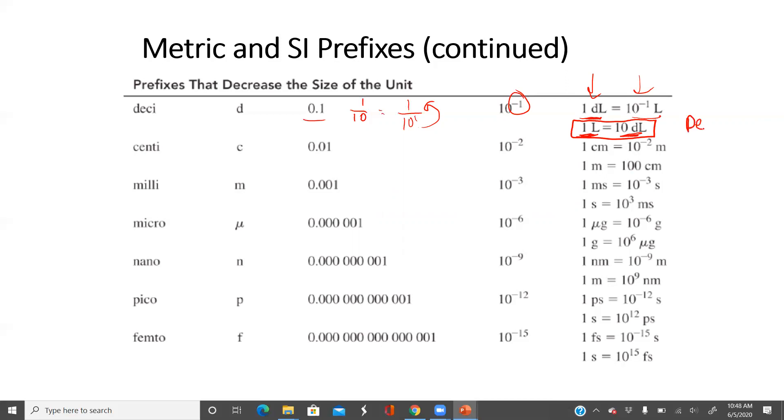Then we go to one centi - it's one hundredths. One hundredths is one over 10 squared. Again, if I want that to be in the numerator it's 10 to the negative 2. Again, if you're like me and you want to try to be positive and avoid negative exponents, you might remember one meter - the meter is bigger than the centimeter - is a hundred centimeters. Or what could help you: how many years in a century? A hundred.